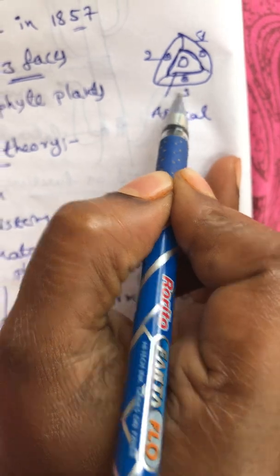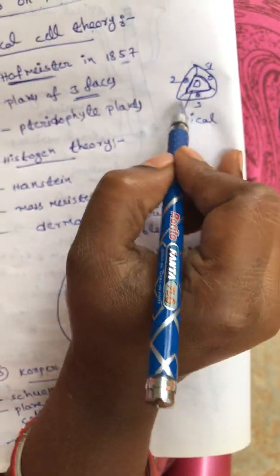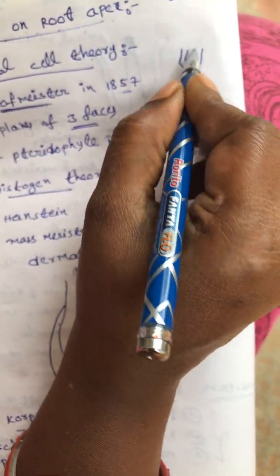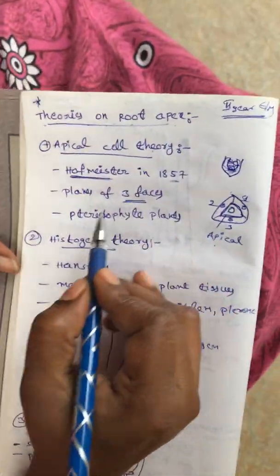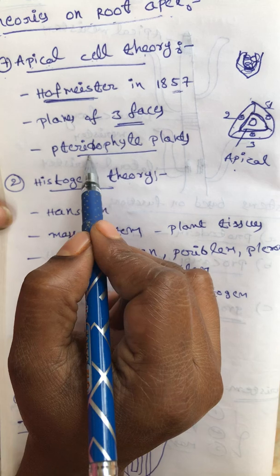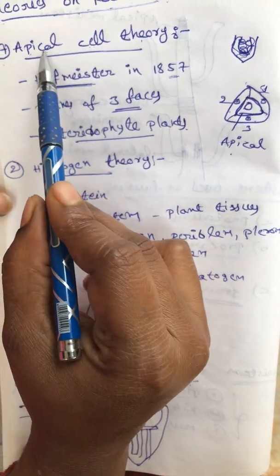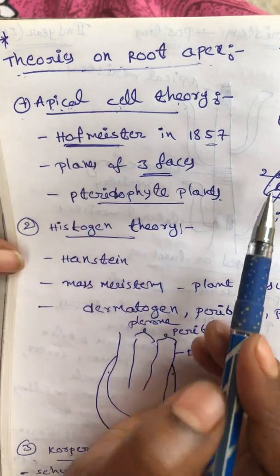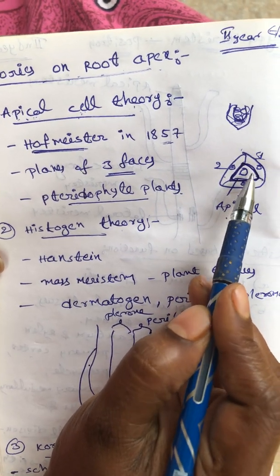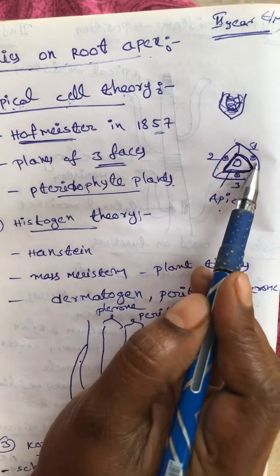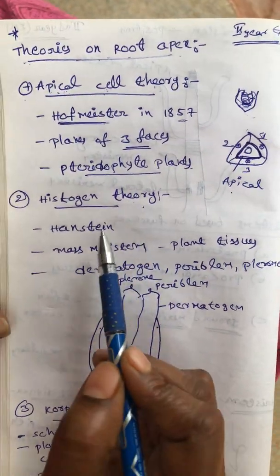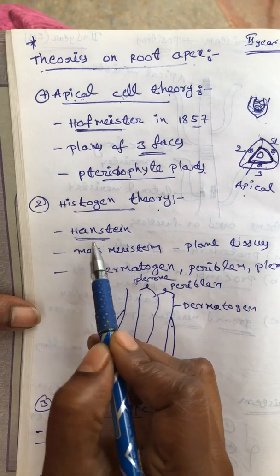Three phases of divisions are occurred, then later they produce the total root apex part. This type of theory is mainly seen in pteridophytic plants. The apical cell is a single cell that looks like a triangle shape. This triangle shape shows three phases of divisions, and later it produces the root apex part.